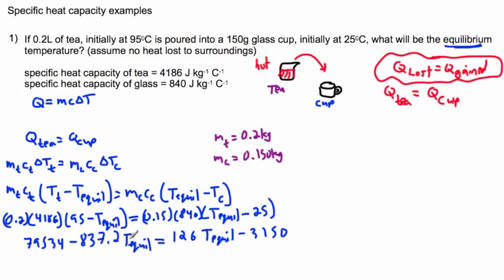I'm trying to get my equilibrium temperatures all on one side. I'm going to move this one to the right and move this minus one over to the left. I want all my numbers on one side and all the things with T equilibrium on one side. So 126 plus 837, that's going to tell me what's on the right side.